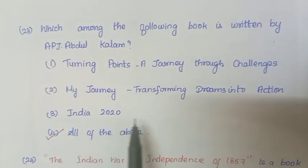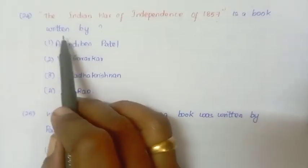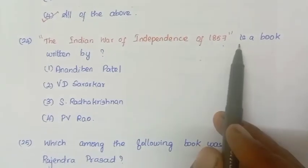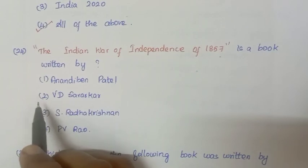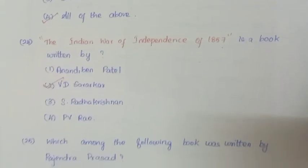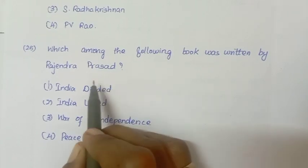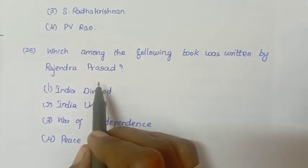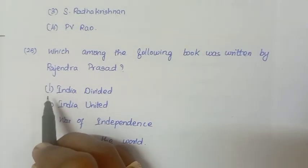The Indian War of Independence of 1857 is a book written by V.D. Savarkar. Next question: Which among the following books is written by Rajendra Prasad? Answer is India Divided.